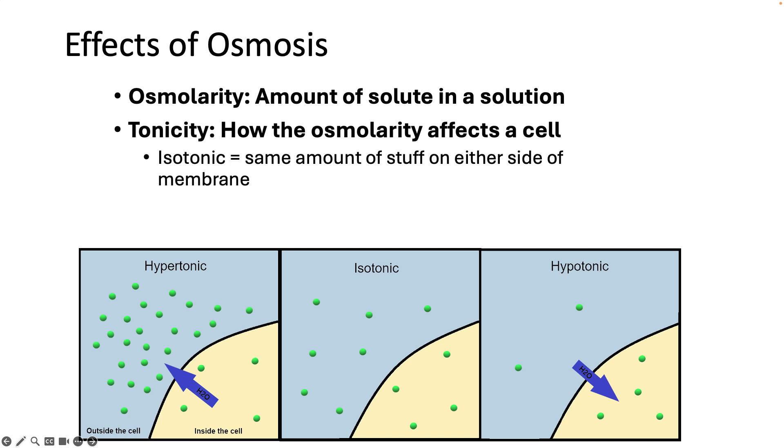When we talk about how this affects cells, we talk about tonicity. If the amount of stuff is the same on both sides of the membrane, we call that isotonic. There's no osmotic force causing water to go either direction because the concentration is equal inside and outside the cell—no force to make it move.